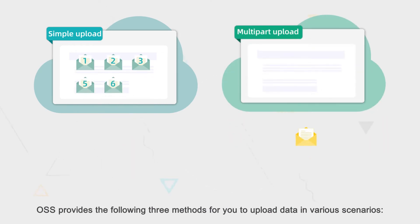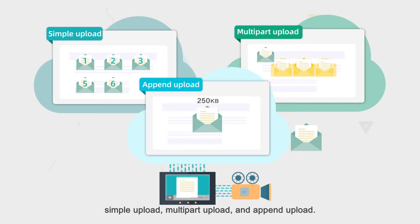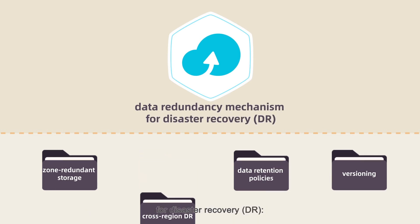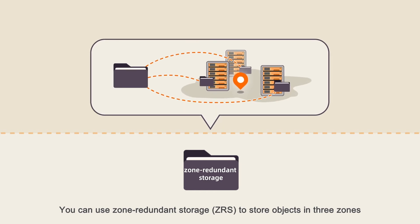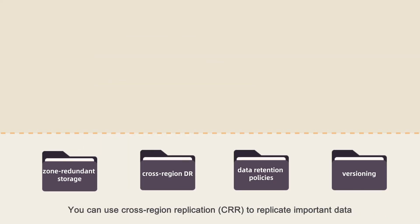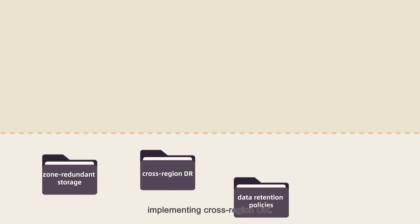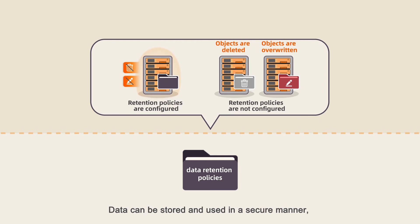OSS provides the following three methods for you to upload data in various scenarios: simple upload, multi-part upload, and append upload. OSS provides a well-established data redundancy mechanism for disaster recovery. You can use zone redundant storage to store objects in three zones within a region, ensuring data reliability and availability in case of hardware failures. You can use cross-region replication to replicate important data from one region to another, implementing cross-region DR.